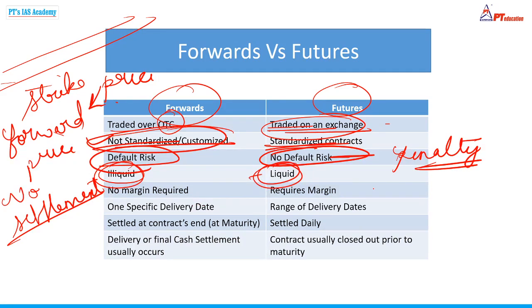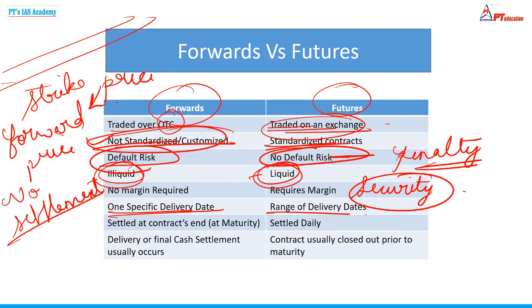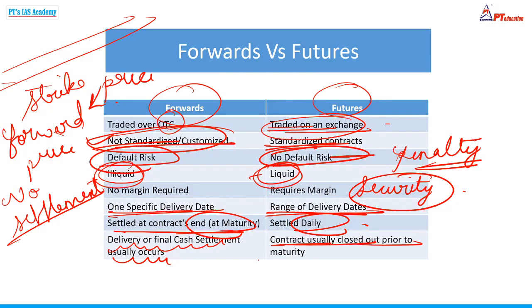In futures, margin is required — a security deposit — so that if a party defaults, at least the security deposit can be recovered. In forwards there is one specific delivery date; in futures there can be multiple delivery dates. Forwards are always settled at maturity; futures are settled daily because an exchange is involved. In forwards, usually physical delivery of the asset is taken or cash settlement is done. In futures, contracts are usually closed out before maturity — positions are exited once profit is made.